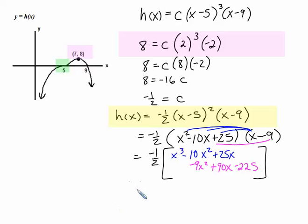Combine our like terms. So we're going to have x cubed minus 19x squared plus 115x minus 225.